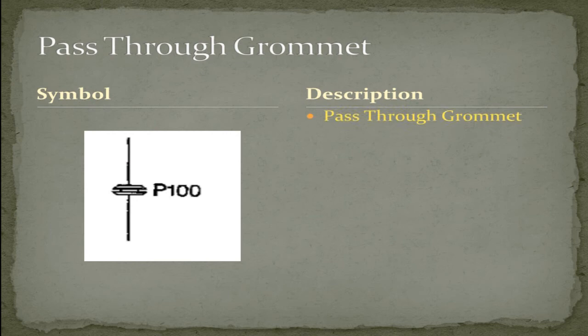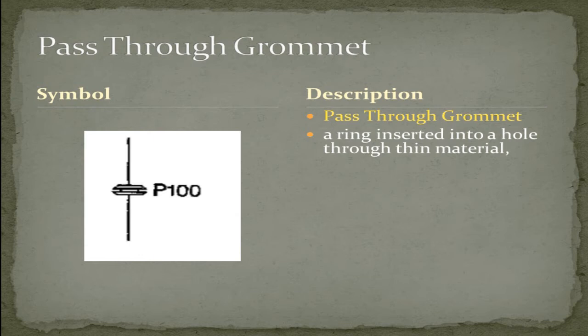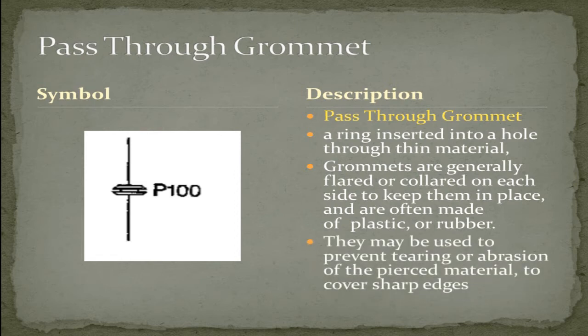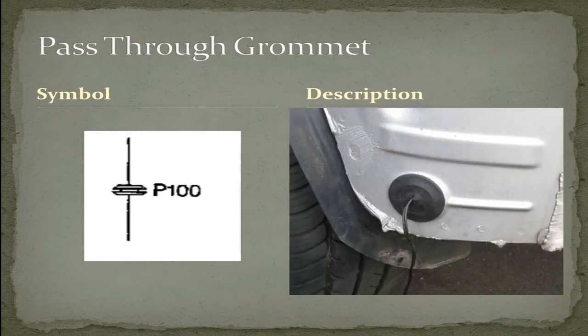A pass-through grommet. A ring inserted into a hole through a thin material. Grommets are generally flared or collared on each side to keep them in place and are often made of plastic or rubber. They may be used to prevent tearing or abrasion of a pierced material or to cover sharp edges. Here's an example of a pass-through grommet. Take note of that P100. That's another reference number we'll be covering at the end of this chapter.